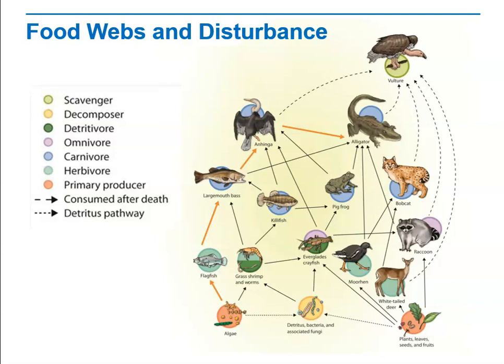Food webs are complex, so it's often difficult to predict exactly how they will respond to any kind of environmental change. Ecologists use these models to ask questions about changes in feeding relationships following a disturbance.